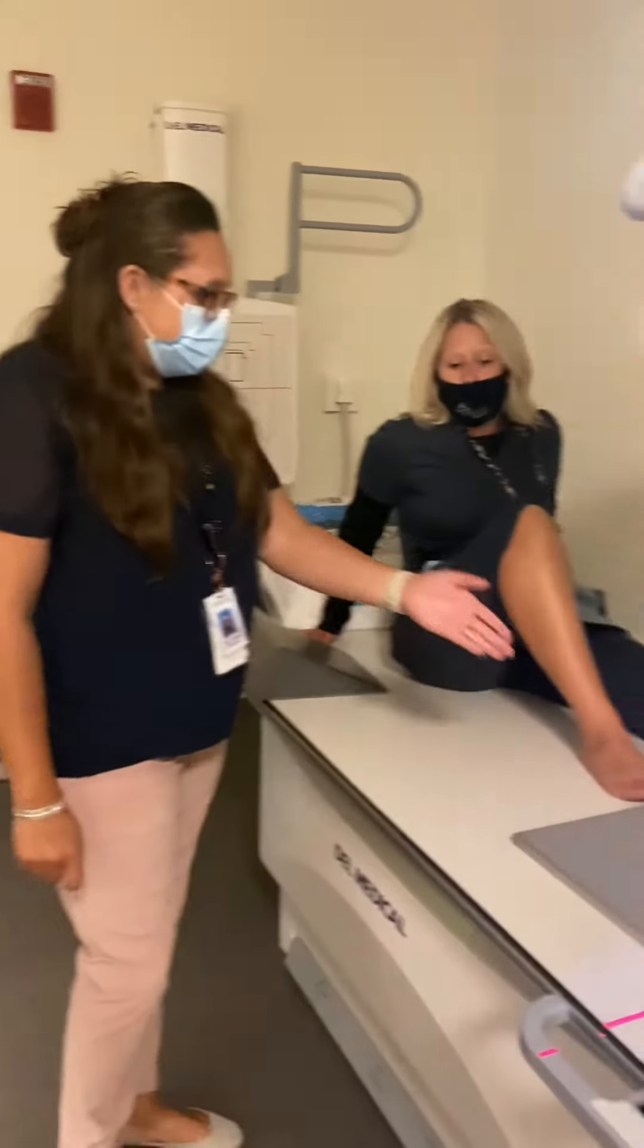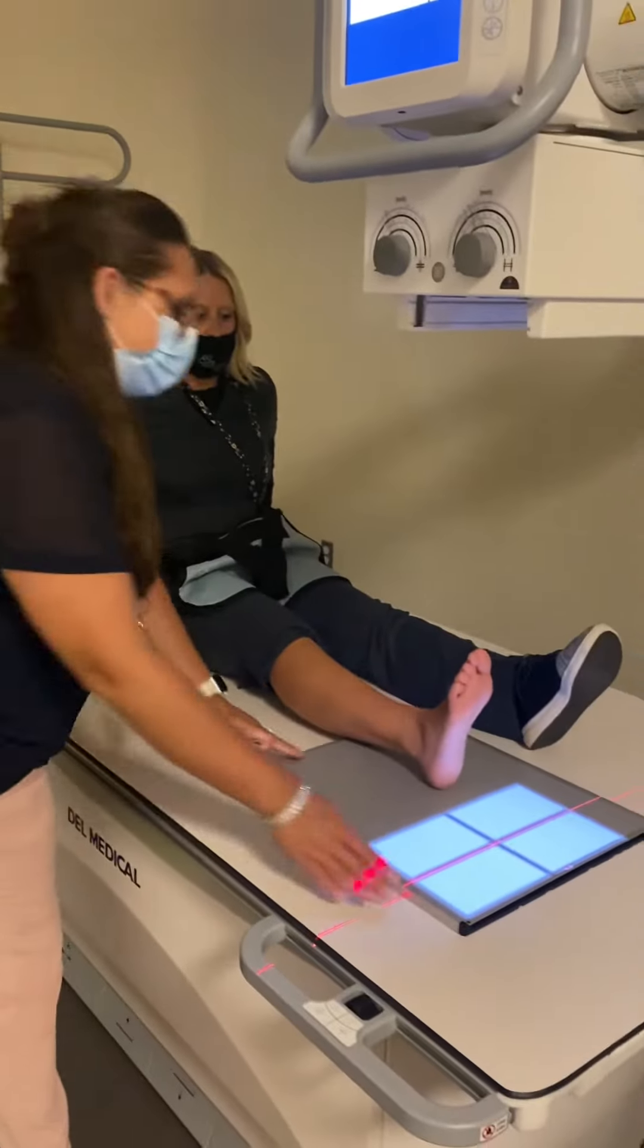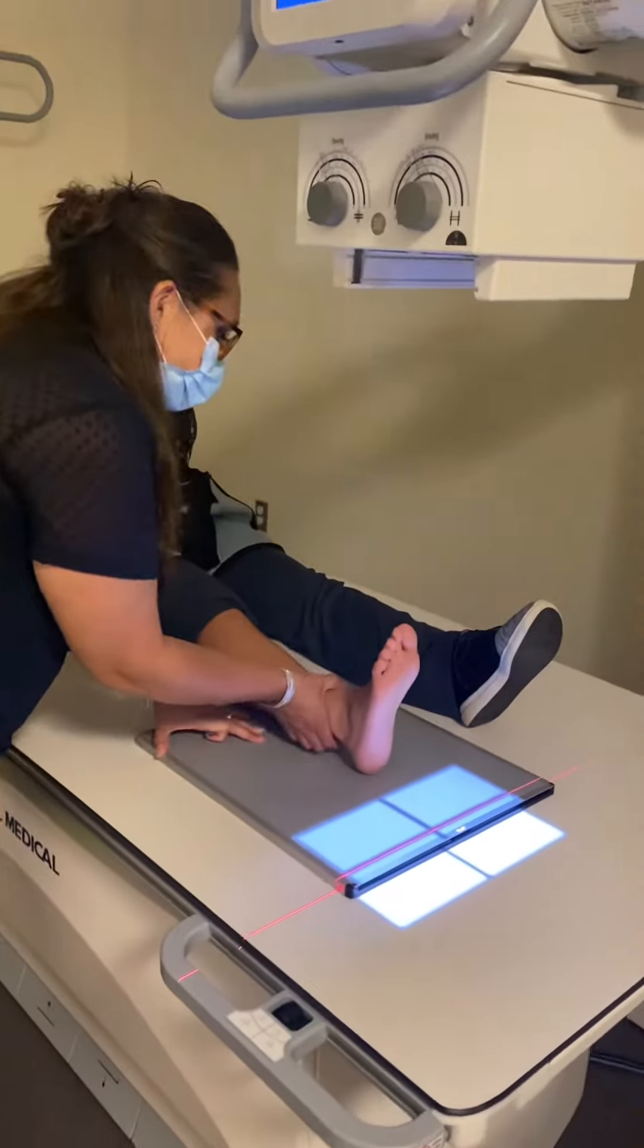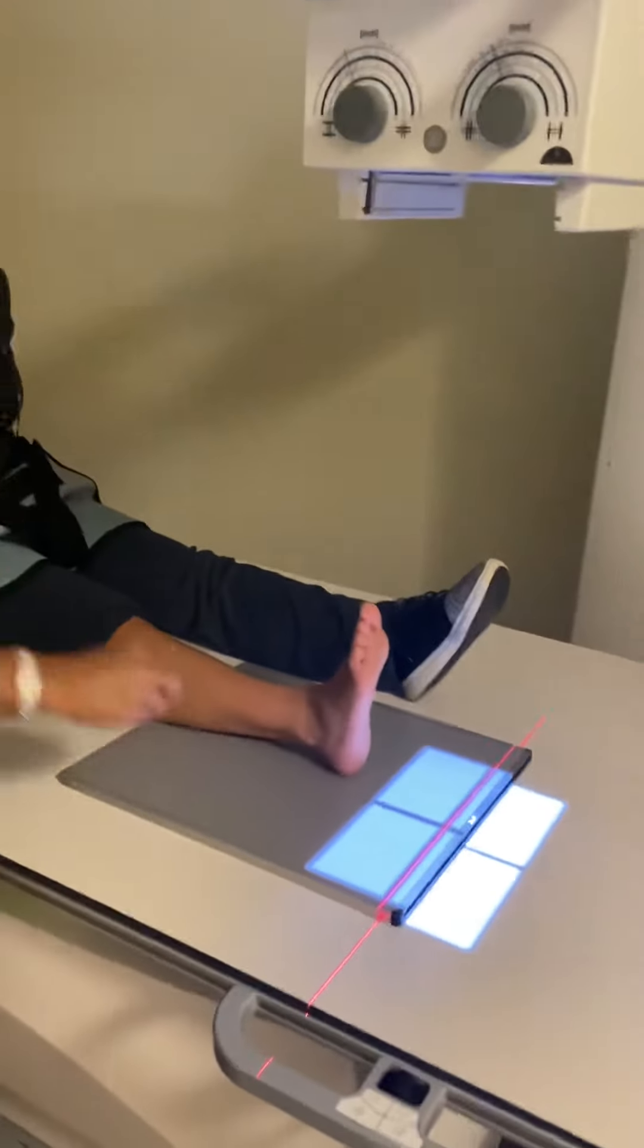So for the ankle, you're going to have your patient point their toes straight up at the ceiling, center their ankle right in the middle of your IR, still a 40-inch SID.